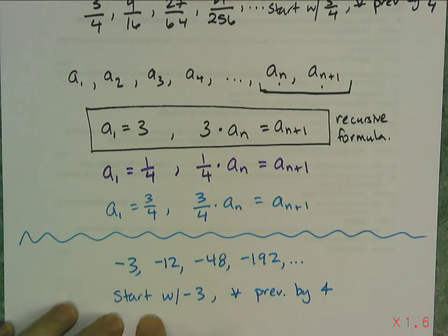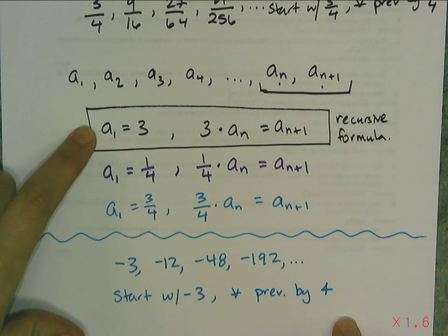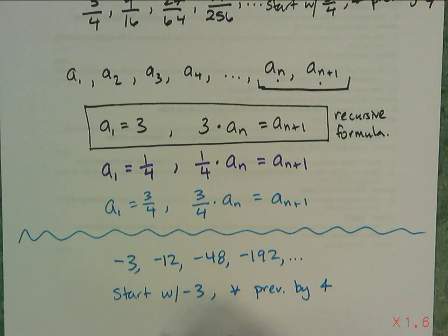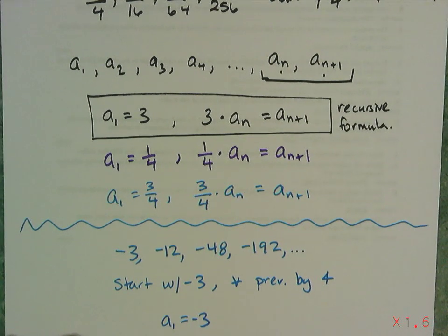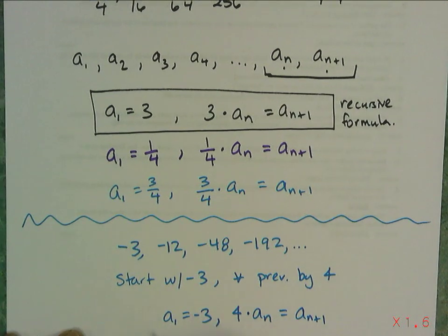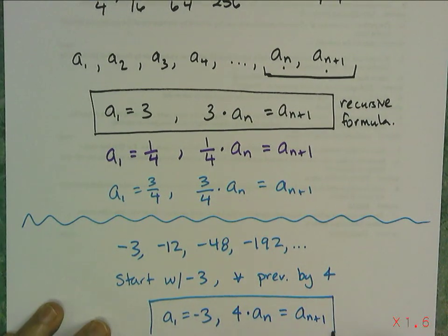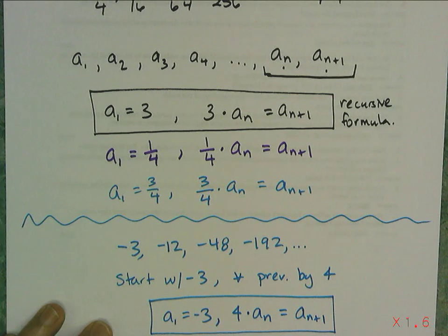Now I want to write this with this notation here, the notation of sequences. So I'm going to say a₁ = -3, because that's what my sequence starts with. And then I have to think about the procedure. The procedure is to take the previous term, which is aₙ, and multiply it by 4. And what does that give me? It gives me the very next term in the sequence, aₙ₊₁. So using the recursive formulas, I have just described that sequence.